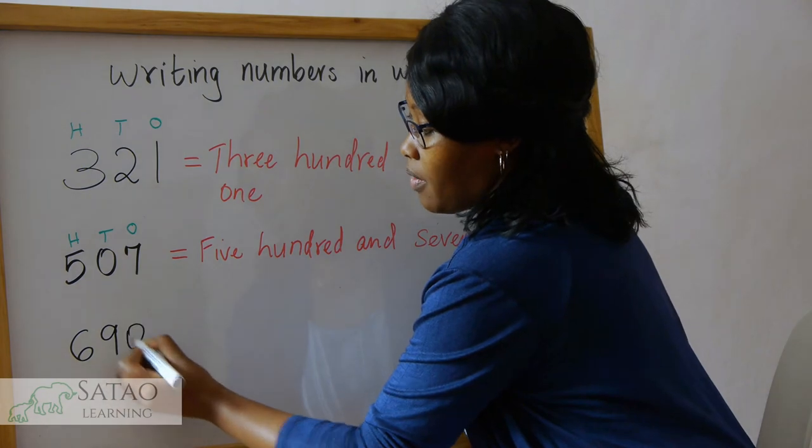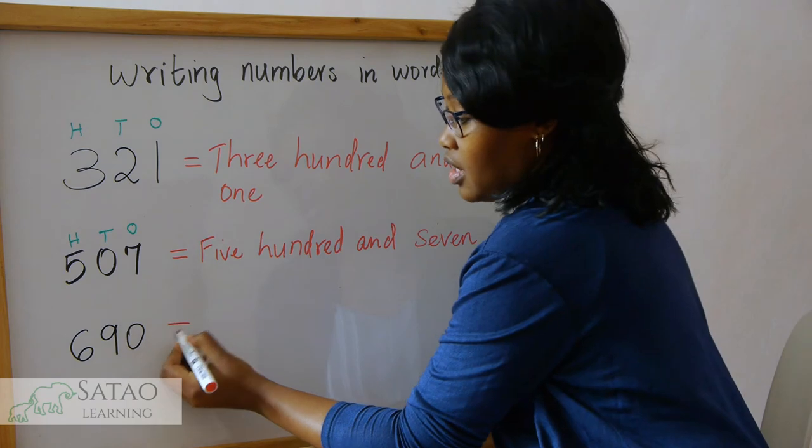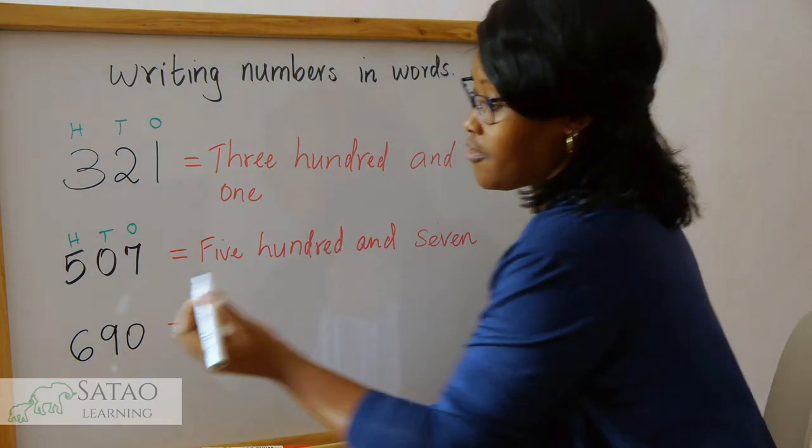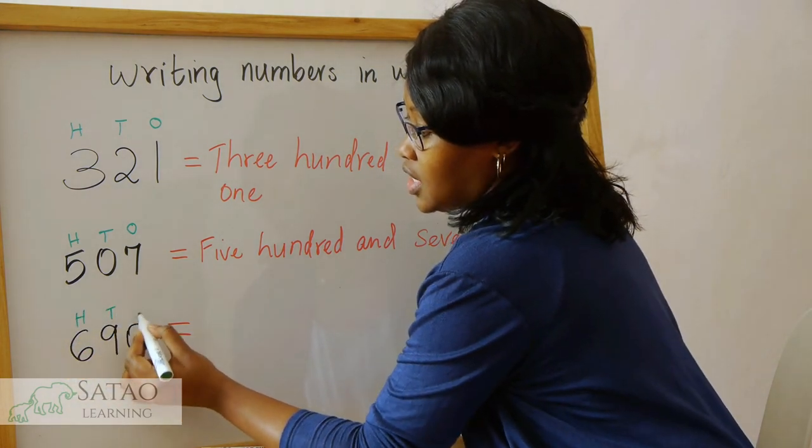Let's say we have that number. How do we write it in words? Again, keep in mind the place values. We have hundreds, tens, and ones.